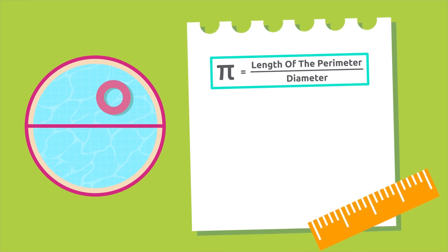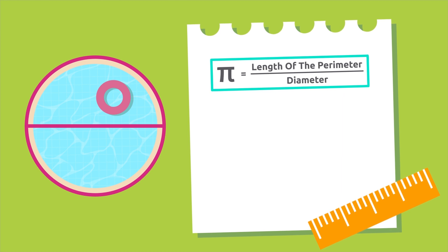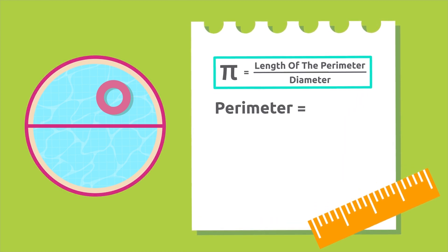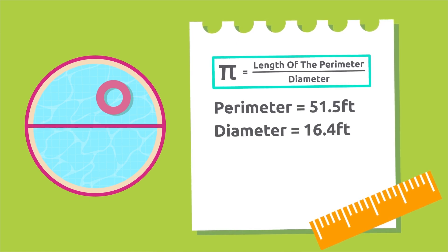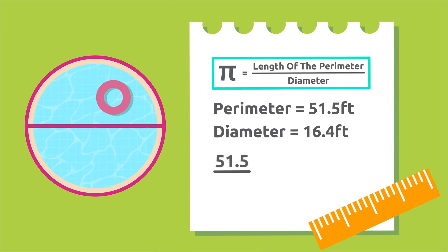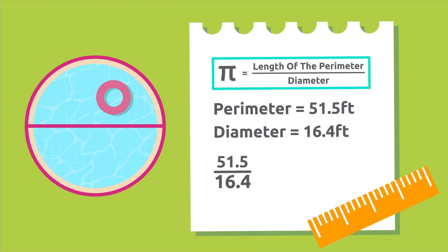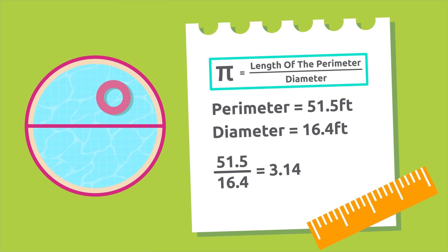Now measure the perimeter of this swimming pool, divide the length by its diameter, and you'll also get 3.14. Let's see: the perimeter of this circular swimming pool is 51.5 feet and its diameter is 16.4 feet. If we divide 51.5 by 16.4, we'll get 3.14.